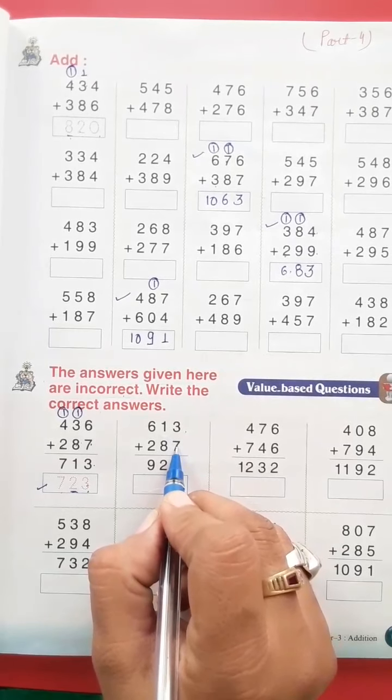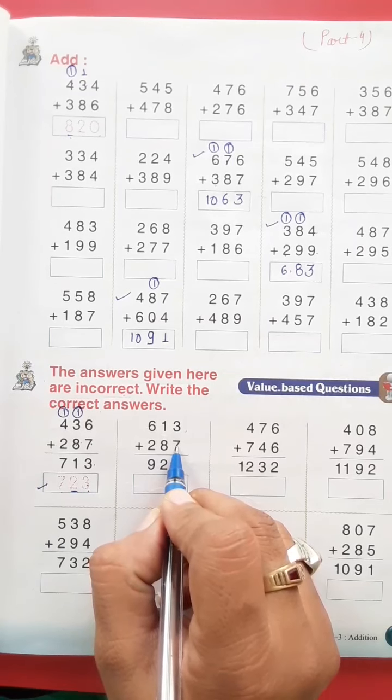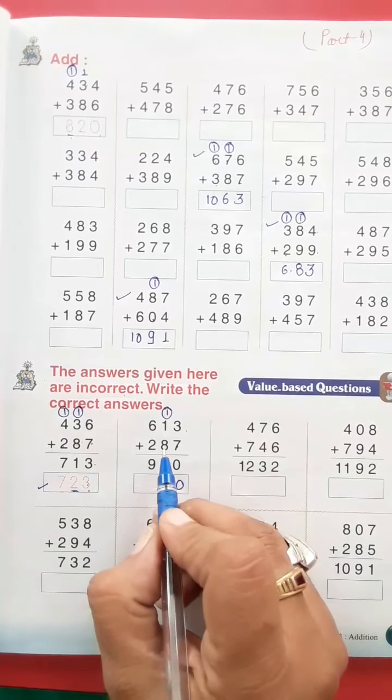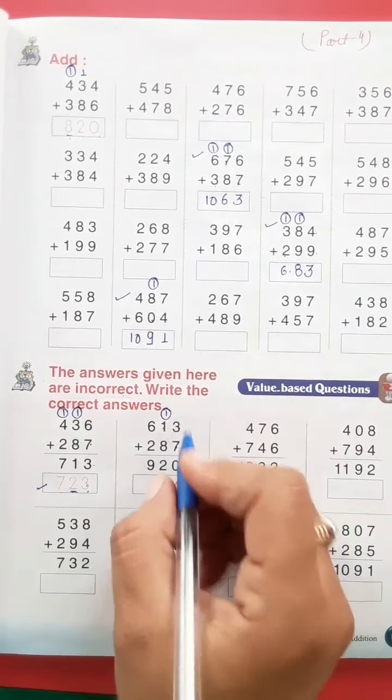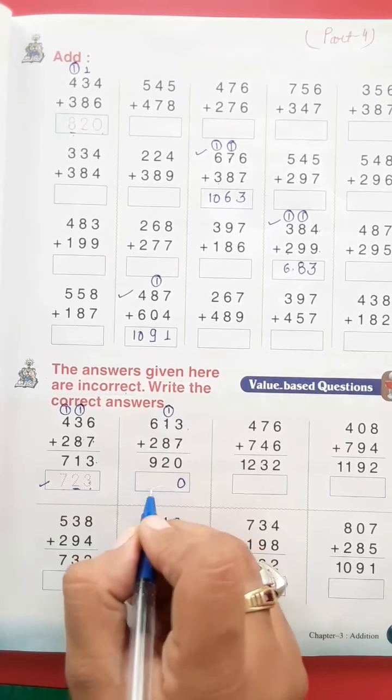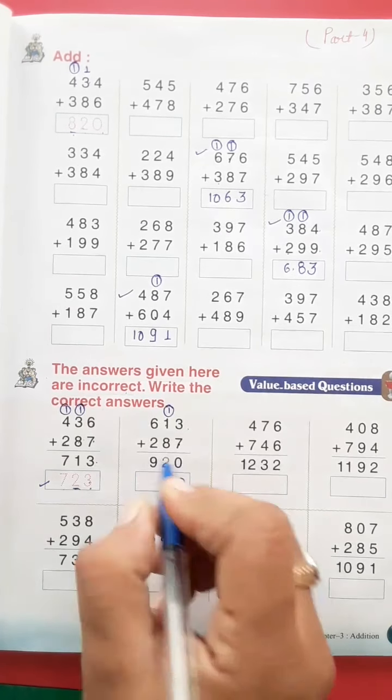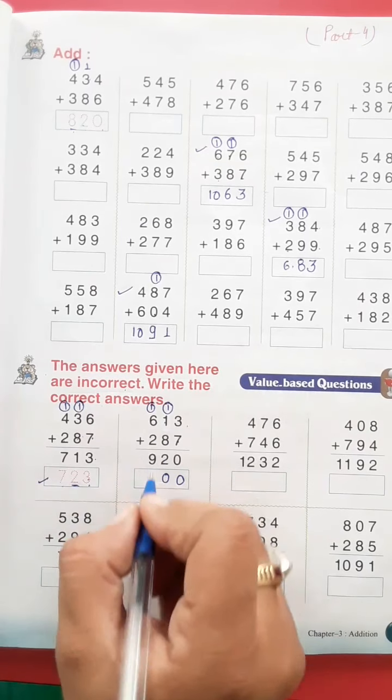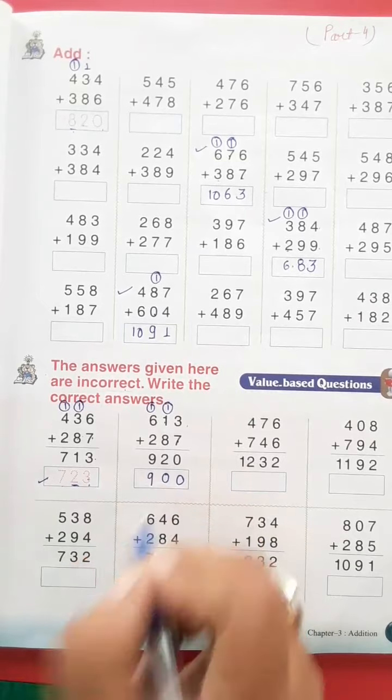Isi tariqe se hum ek aur sum dekhte hain. Three and seven is ten, 0 carry 1. One and eight is nine, plus 1 is ten, 0 carry 1. Six and two is eight, plus 1 is nine.